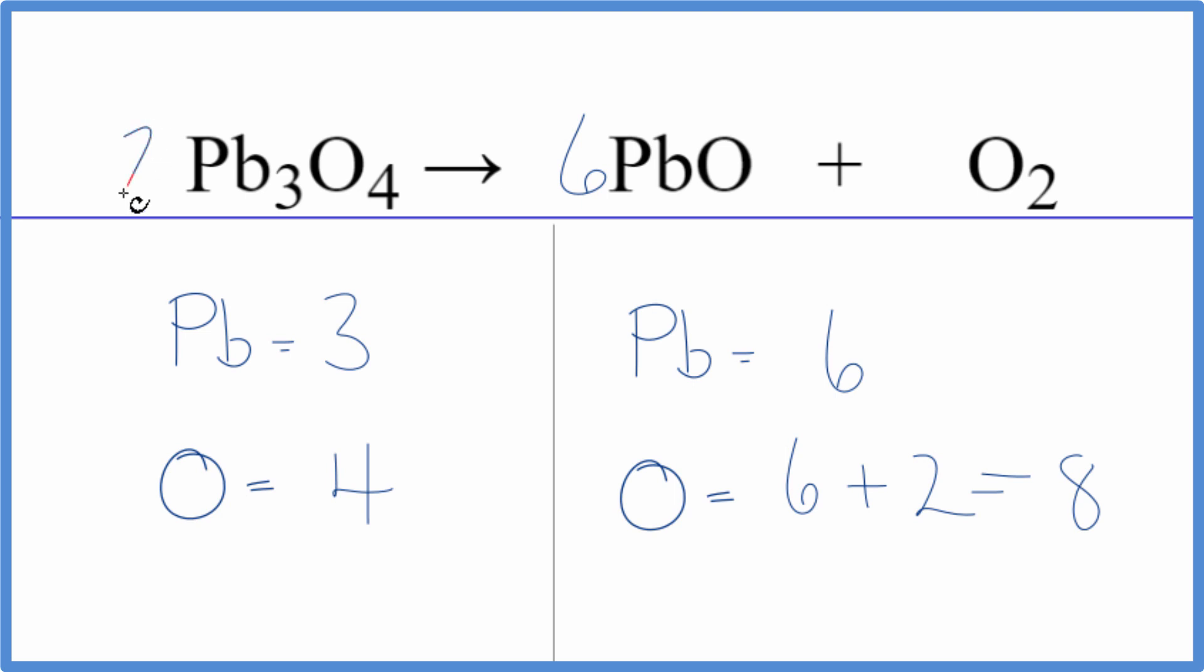All we need to do here now is just double this. 3 times 2, that equals 6. This 4 times the 2, that equals 8. And we're done. This equation is balanced.